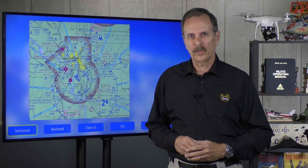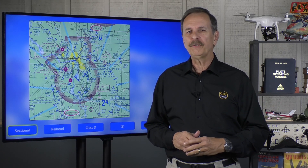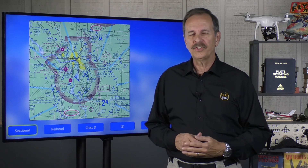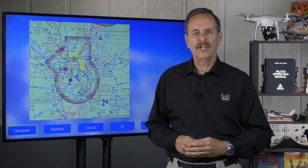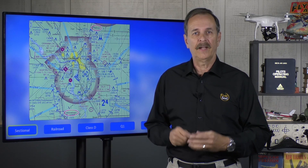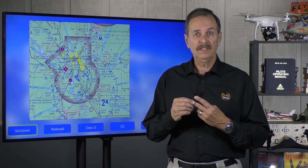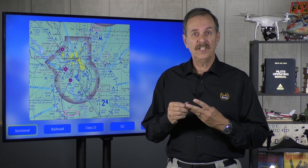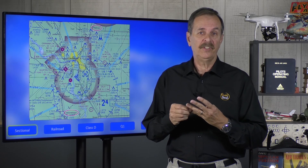Let's start out with a quick review. In order to fly under Part 107, you do have to have an airspace authorization to fly in Class B, Class C, Class D, or the surface area of Class E.